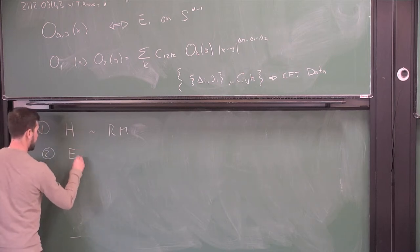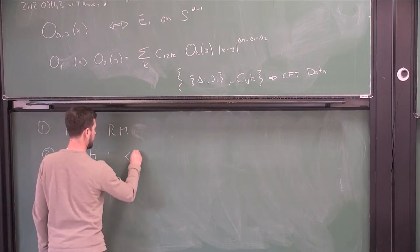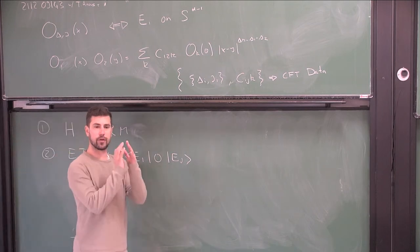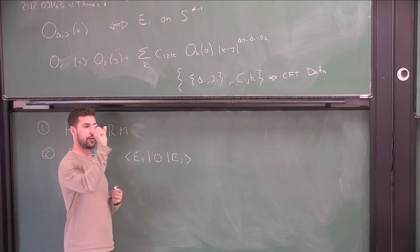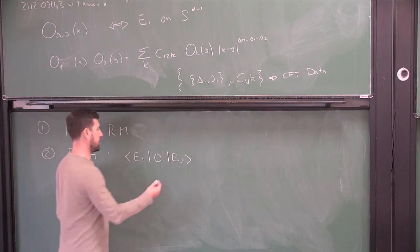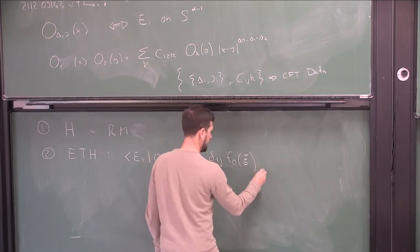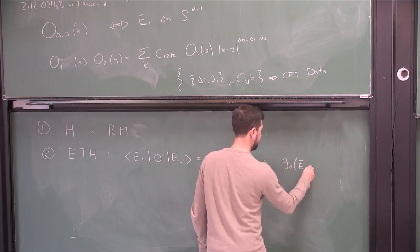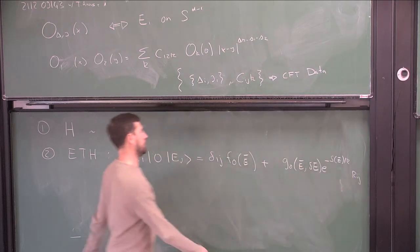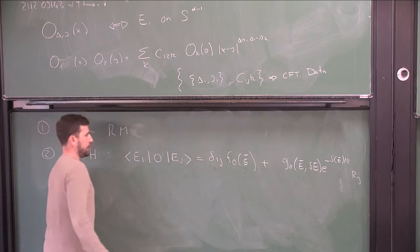One of the nicest ways to organize this is alongside the eigenstate thermalization hypothesis, which says that if you consider the matrix element of a simple operator — think about a chaotic spin chain that's extensive, where a simple operator has support only on a few spins — these matrix elements have a universal structure in chaotic theories. There's a diagonal piece with a coefficient and an off-diagonal piece. There's a general structure: a diagonal piece multiplied by a function, then an off-diagonal piece.